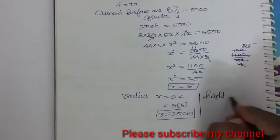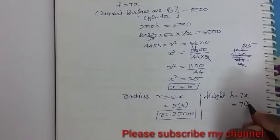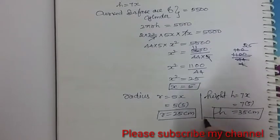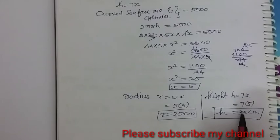And height h is equal to 7x. So 7 into 5, which is equal to 35 centimeters. H is equal to 35 centimeters. So this is the answer: radius is 25 centimeters and height is 35 centimeters.